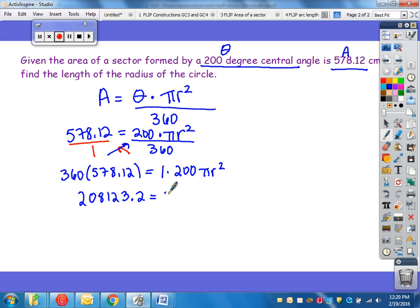On this side, 1 times 200 is just 200, so that's 200 pi r squared.